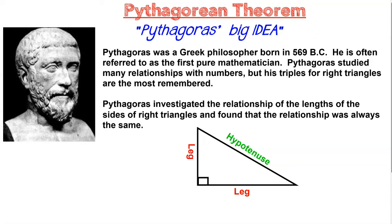This is Pythagoras, and this was his big idea. A theorem is a fancy word for an idea that cannot be proven wrong. Pythagoras was a Greek philosopher born in 569 BC, and he was often referred to as the first pure mathematician. He studied the relationships of the lengths and sides of right triangles and found something very interesting.